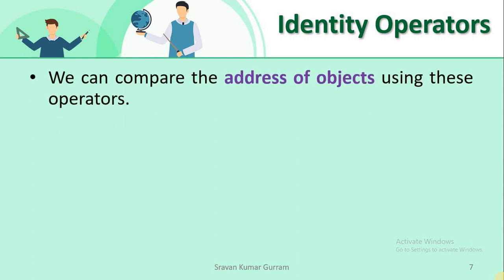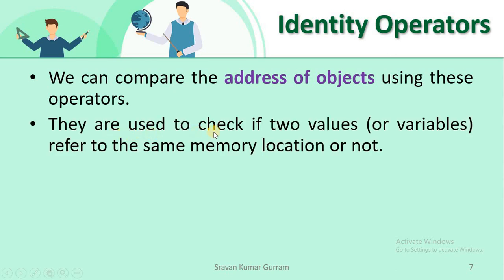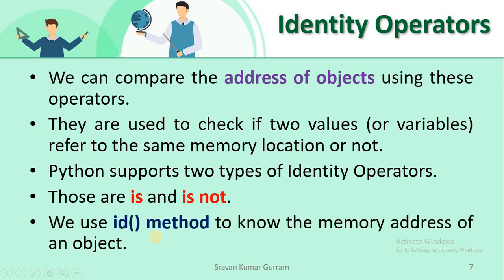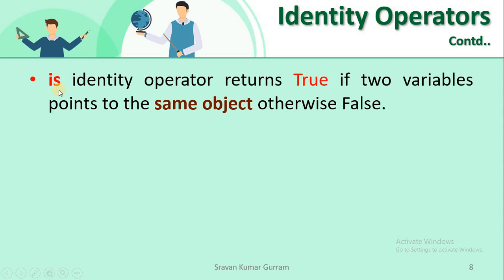Next are identity operators. We can compare the address of objects using these operators — we compare the memory location of objects using identity operators. Each and every object is identified with the help of its memory location. These operators are used to check if two variables refer to the same memory location or not. The `is` operator returns true if two variables point to the same object, otherwise it returns false.